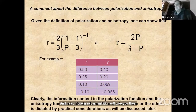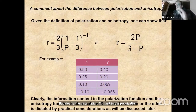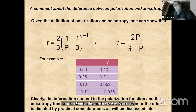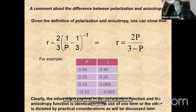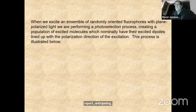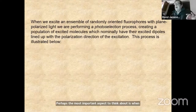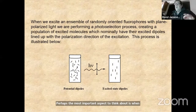The information content in polarization versus anisotropy is essentially identical, and which term to use is dictated by practical considerations. In the clinical sciences, they almost always use the polarization function, whereas in most biophysical measurements they report anisotropy — but clearly it's the same information. An important aspect to consider is that when you excite an ensemble of randomly oriented fluorophores with plane polarized light, you're performing a photo selection process.